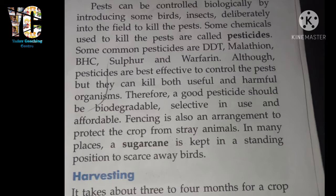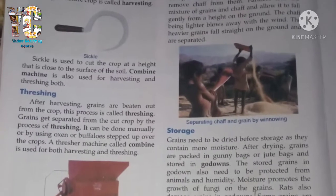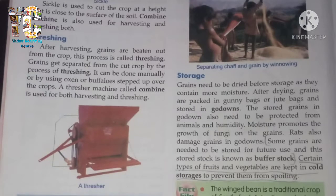Now comes the time to harvest. It takes about three to four months for a crop to mature. The mature crop is ready to cut and gather in heaps. The process of cutting and gathering of mature crop is called harvesting. A sickle is an instrument used to cut the crop at a height close to the surface of the soil. A machine called a combine is also used for harvesting and threshing.